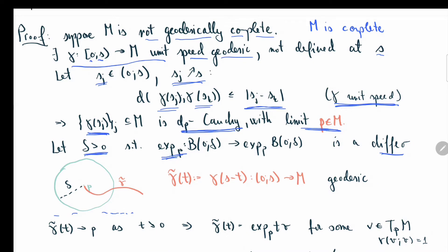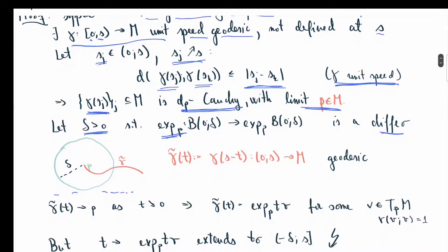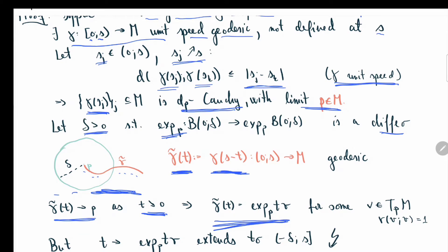In this normal neighborhood, we have a simple description of geodesic segments using the exponential map. Let's re-parameterize our geodesic: let γ̃(t) = γ(s − t), so we reverse the geodesic. As t approaches zero, the new geodesic γ̃(t) approaches p. So every geodesic emanating from p in a normal neighborhood is of the form exp_p(tv) for some unit tangent vector v.